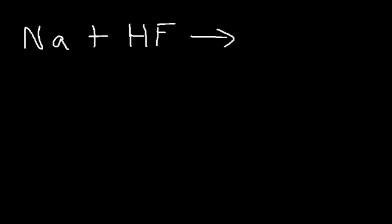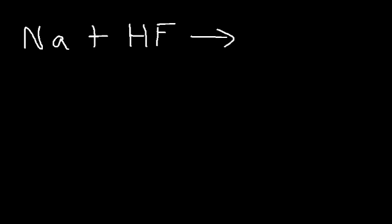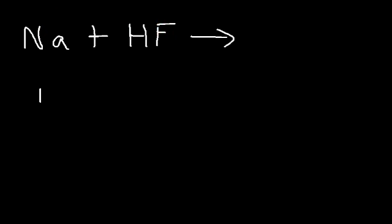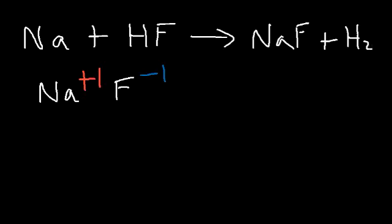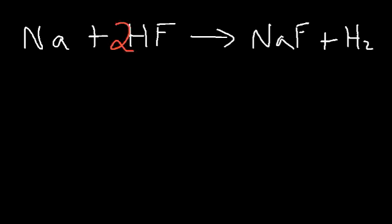Try this example: sodium metal with hydrofluoric acid. What are the products and will it work? Sodium is way above hydrogen on the activity series, so sodium is definitely strong enough to displace hydrogen. Sodium is going to pair up with fluorine. Sodium has a plus one charge and fluoride has a minus one charge, so they combine one-to-one forming sodium fluoride. Hydrogen is displaced, giving H2. To balance, put a 2 in front of HF, a 2 in front of NaF, and a 2 in front of Na.